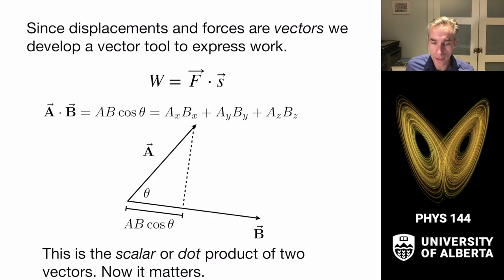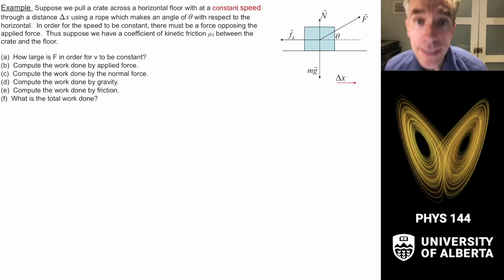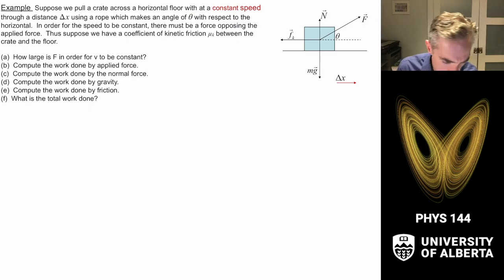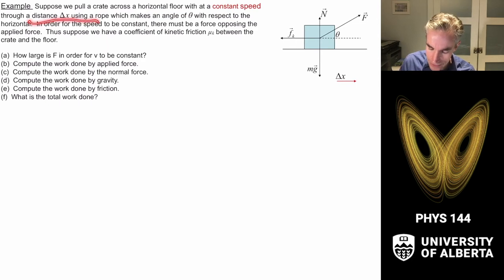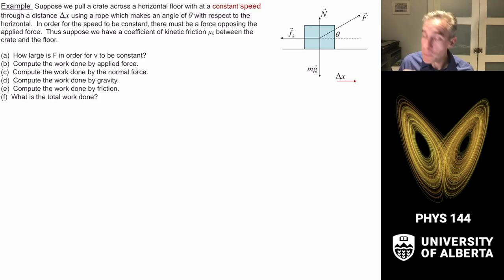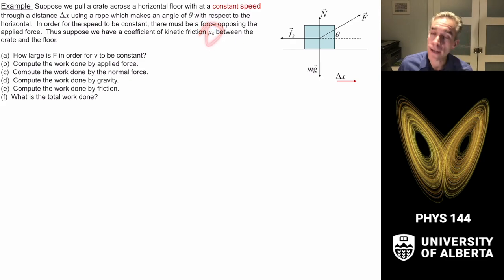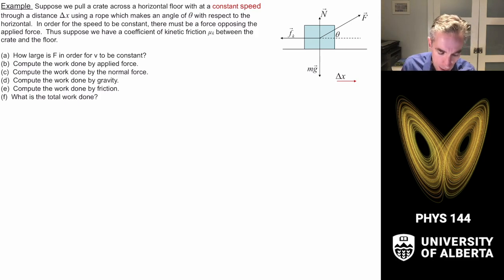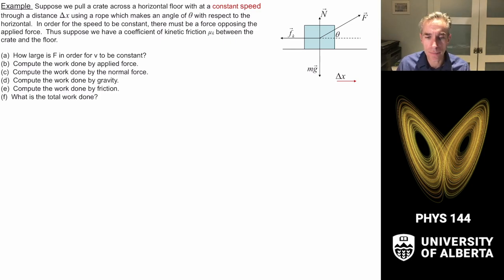Here's an example: pulling a crate across a horizontal floor at constant speed through a displacement Δx using a rope at angle θ above horizontal. For constant speed, the system is in equilibrium — no net acceleration — so there must be a kinetic friction force μₖ opposing the applied force. We'll use these variables to find the object properties.